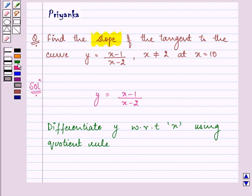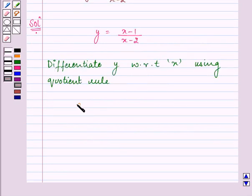On doing so we have dy by dx is equal to denominator into derivative of the numerator minus numerator into derivative of the denominator upon denominator whole square.